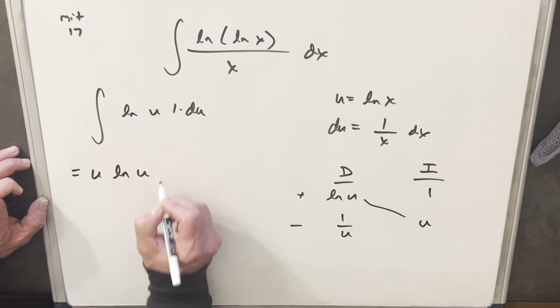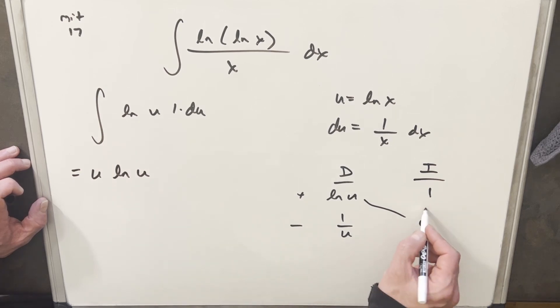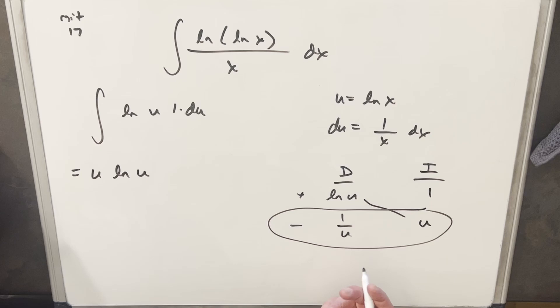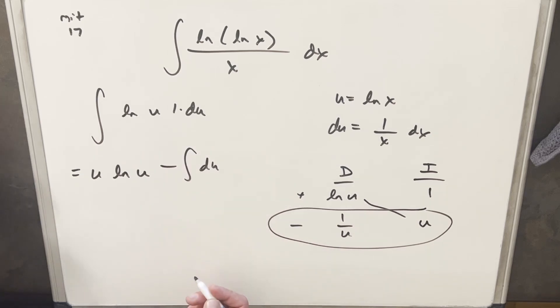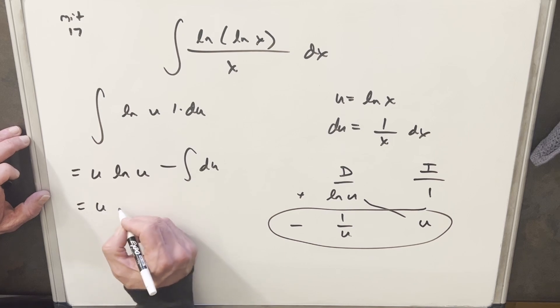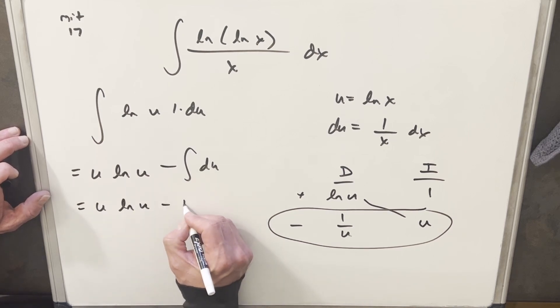Okay, so we have part of our solution right here on this diagonal. We're gonna have u, natural log of u. Then this line's an integral. Now the only thing is u times 1 over u is just 1. Okay, so we're actually integrating just du or 1. So this is gonna give us u, natural log of u, minus u.